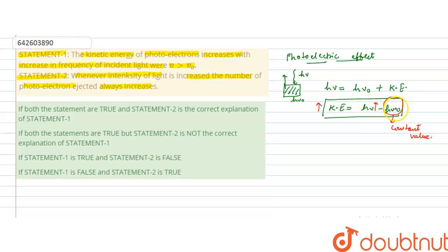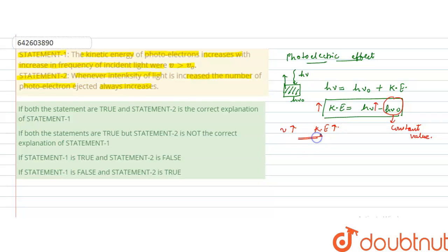Since hν₀ is a constant value being subtracted, if the incident frequency ν increases, then the kinetic energy of the photo-ejected electron will also increase. So Statement one is correct.